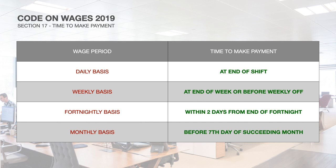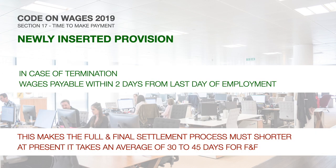In cases where the wage period is fixed on a fortnightly basis, wages are payable within two days from the end of the fortnight. And finally, in cases where the wage period is fixed on a monthly basis, wages are payable within seven days of the succeeding month. In case of termination of the employee, the amount of wages is payable within two days of the last date of employment.